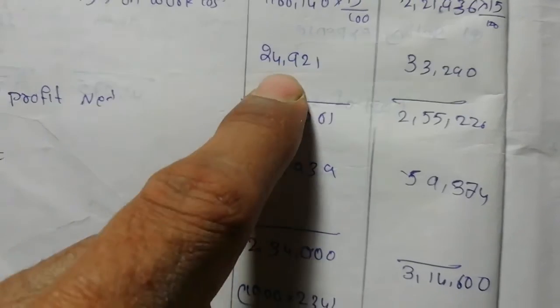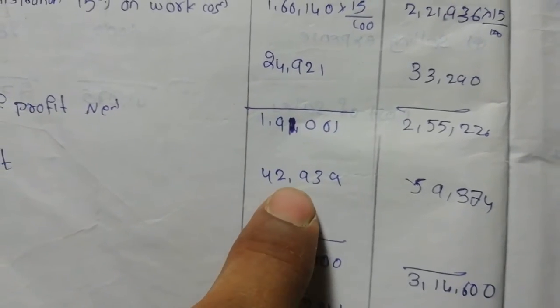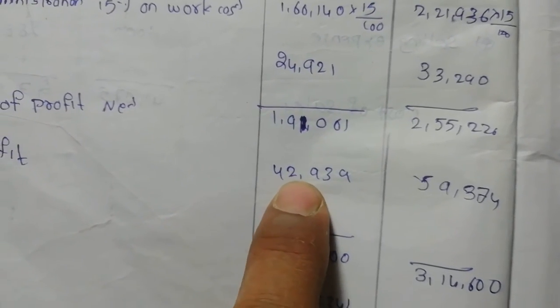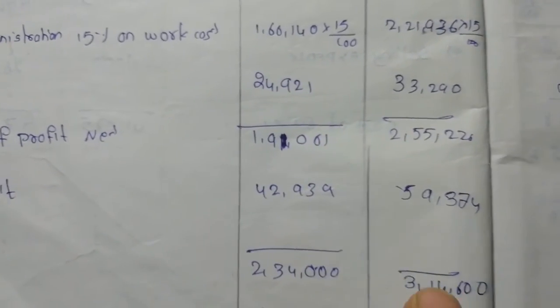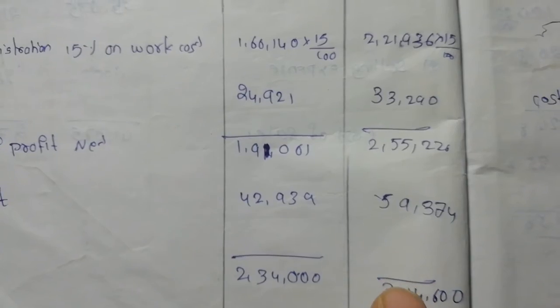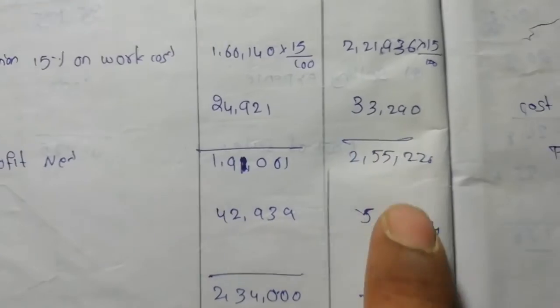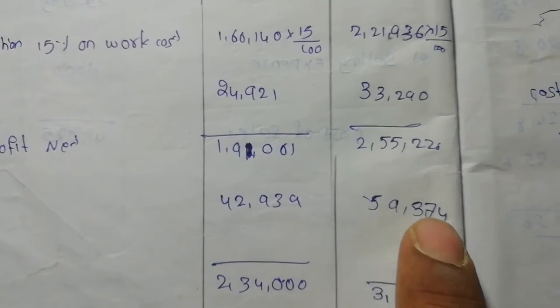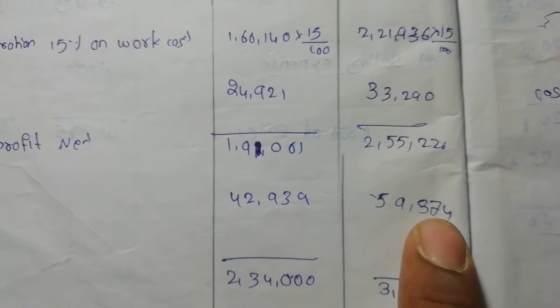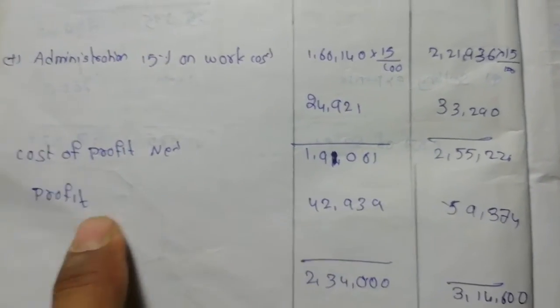By comparing sales revenue with total cost, the balance gives the profit. The profit is 59,374. This is the final profit figure.